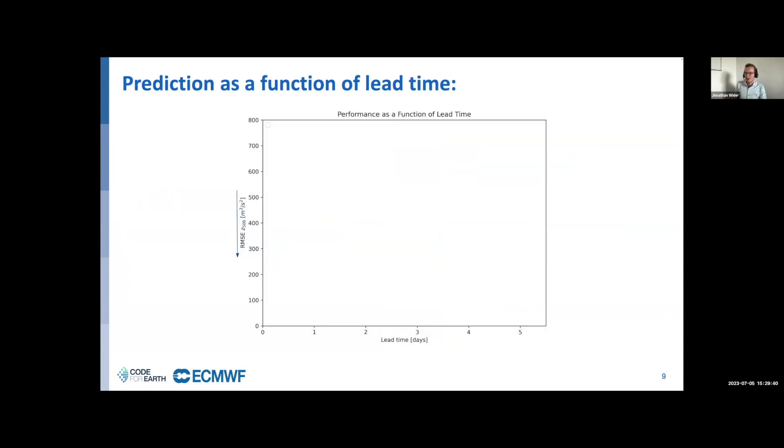As WeatherBench is a benchmark dataset, there are luckily already a few methods we can compare to. This plot shows performance as a function of lead time. Lead time is the amount of time we want to predict into the future, given here in days. We plot on the y-axis the root mean squared error of geopotential height at 500 hectopascal. Smaller is better in this case.